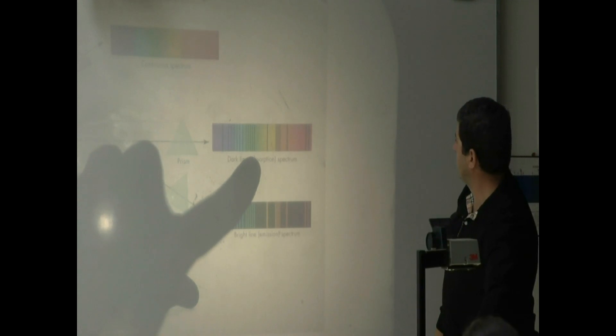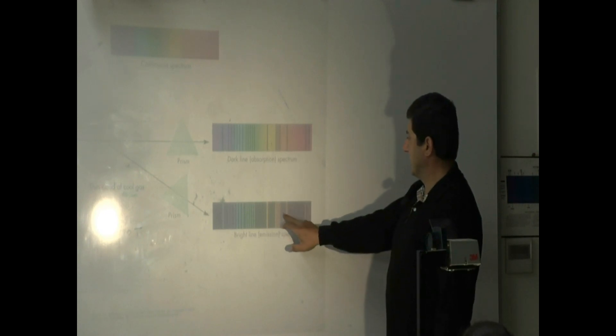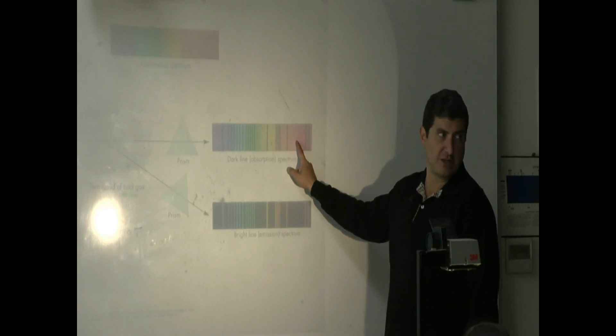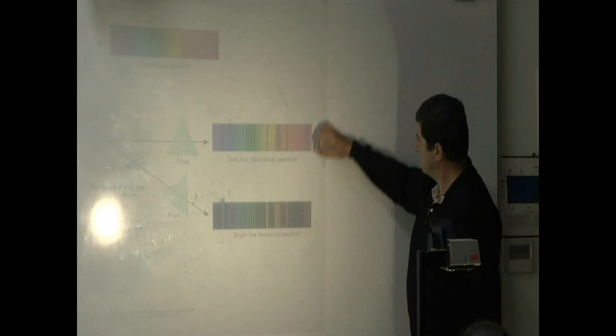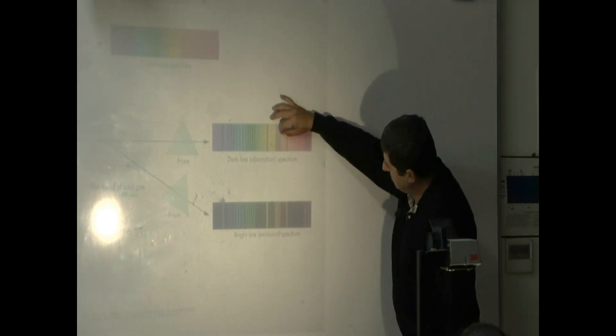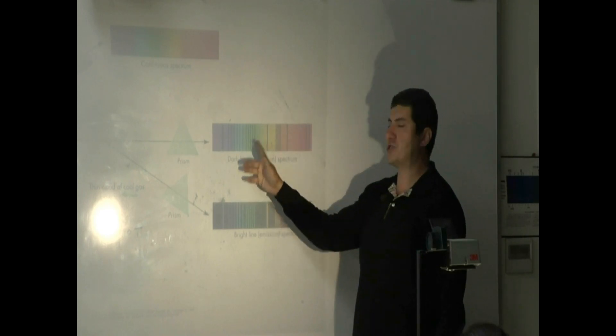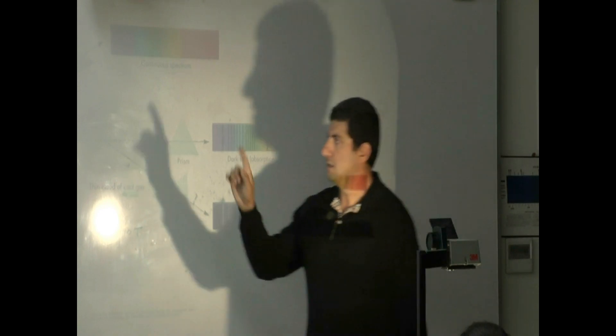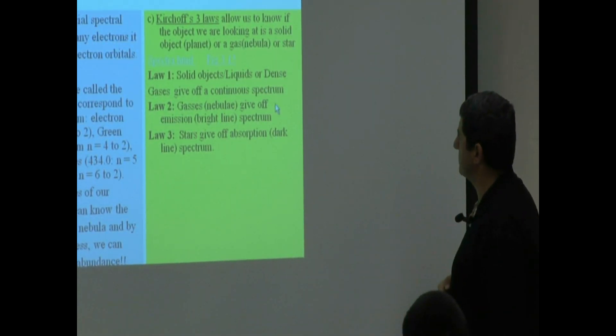Dark line absorption spectrum. Here, the background is dark. The lines are colored. Here, the background is what? Colored. But certain colors are absorbed. Absorbed. Absorbed. Absorbed. They're missing. So this kind of thing is called dark line spectra. What objects have this kind of spectra? Only stars.